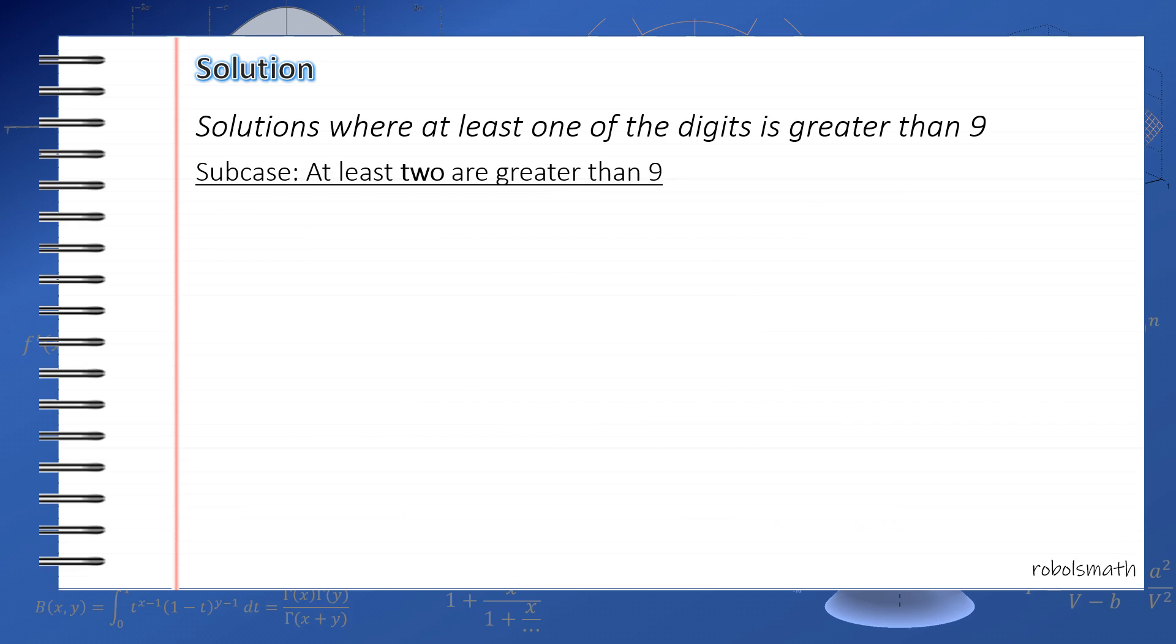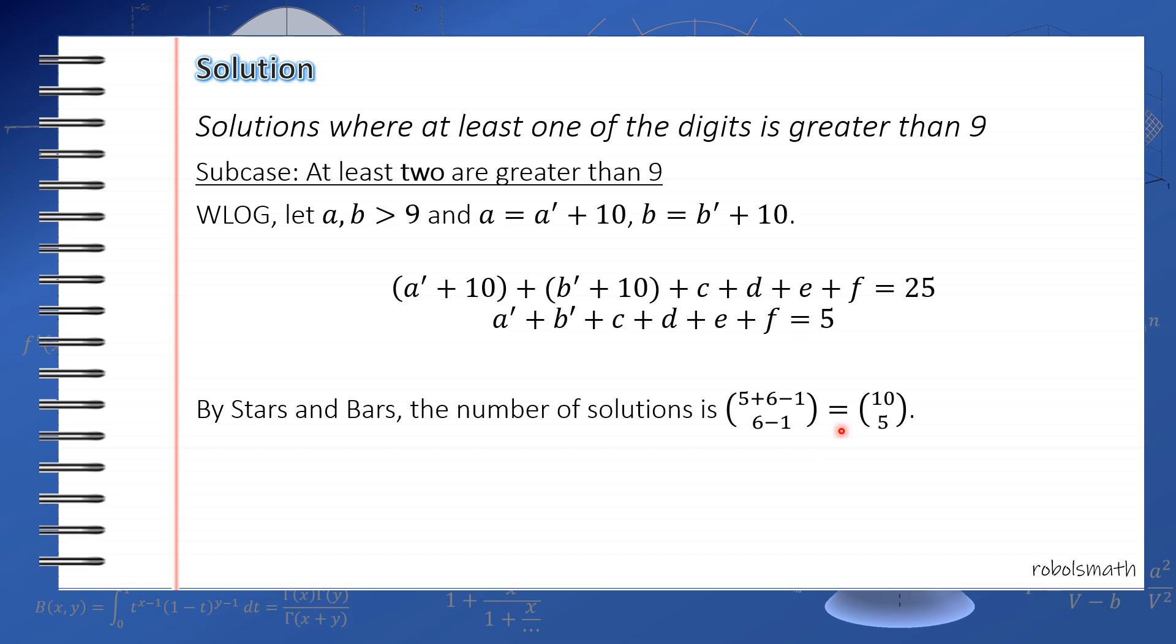So the second subcase. The subcase is at least two are greater than 9. So again, without loss of generality, we let a and b greater than 9 and we use the substitution a is equal to a prime plus 10 and b is equal to b prime plus 10. So again, applying this substitution gives us a prime plus 10 plus b prime plus 10 plus c plus d plus e plus f is equal to 25. Simplifying this gives you a prime plus b prime plus c plus d plus e plus f is equal to 5. Now you're back to all variables. So quite simple. Using stars and bars, the total is 5 plus 6 minus 1 taken 6 minus 1 is equal to 10 taken 5. Easy.